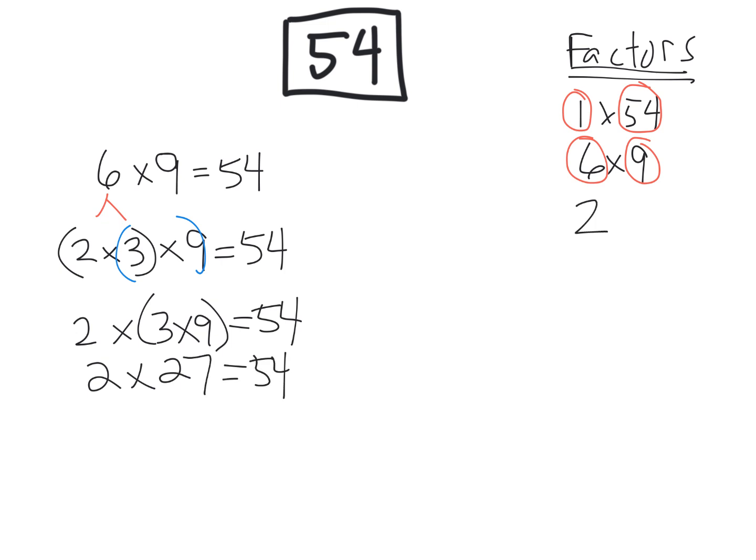And so that gives us 2 times 27 is 54. So that gives us 2 new factors. 2 times 27 is 54. So we have two more factors.